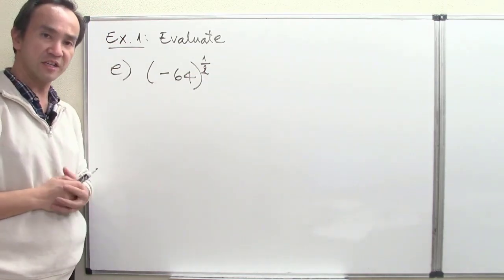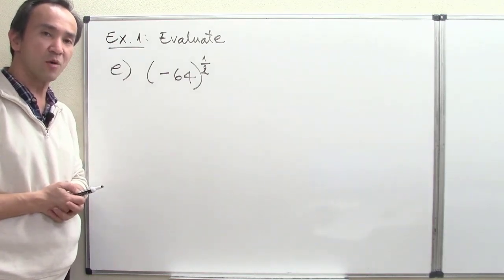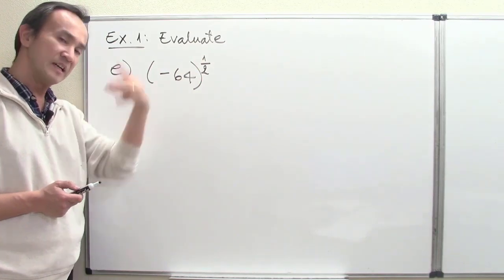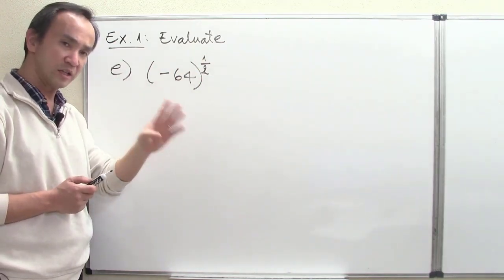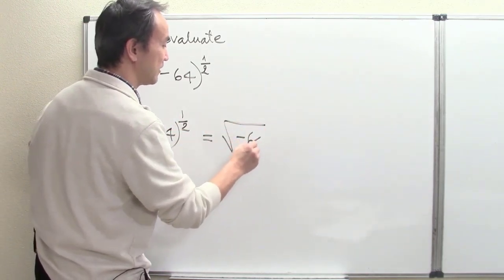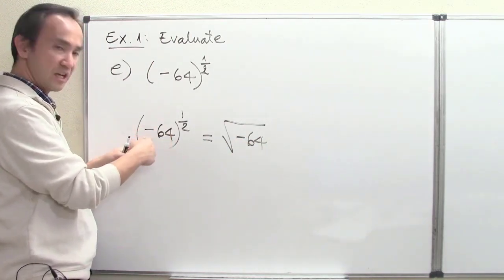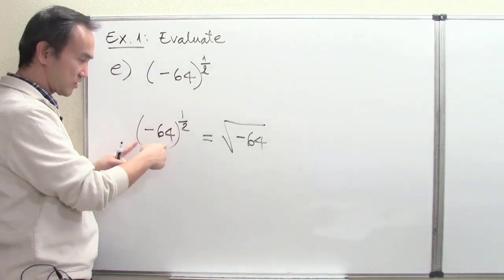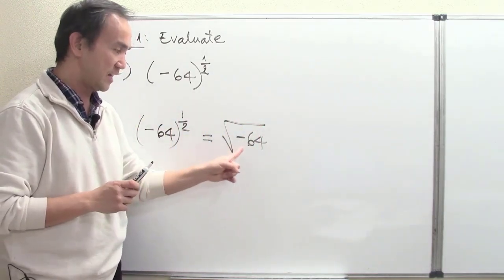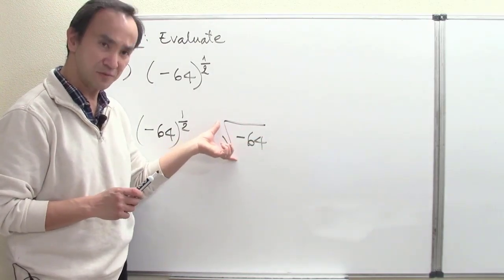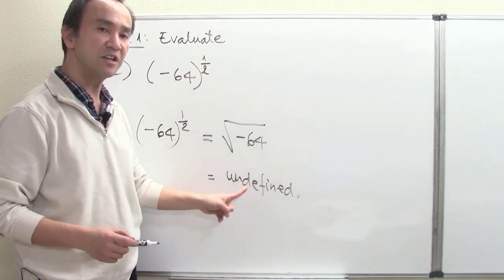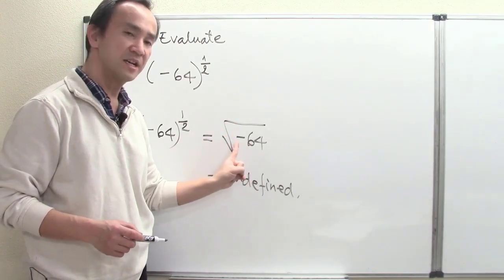Part E: evaluate negative 25 in parentheses raised to the 1 half power. According to order of operations, we must raise the entire negative 64 — including the sign — to the 1 half power. So this is understood as the square root of negative 25. But from our understanding about even roots, we cannot take a square root — or generally any even root — of a negative number. So our answer here is undefined.